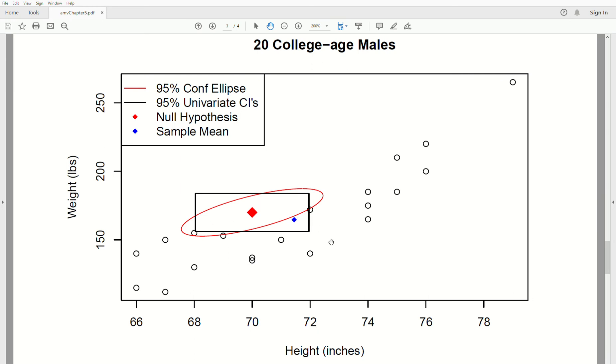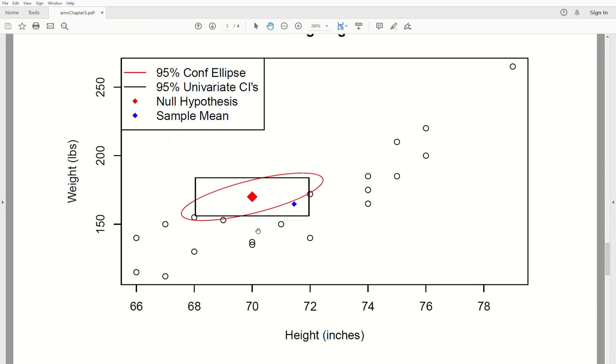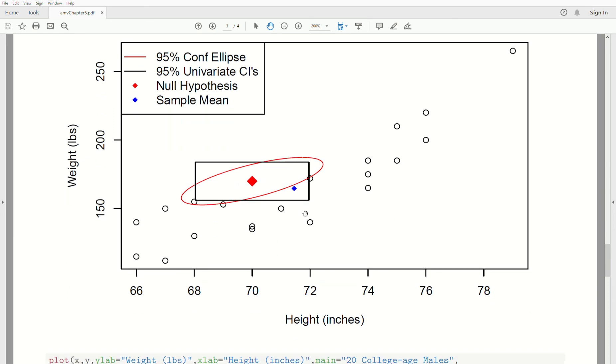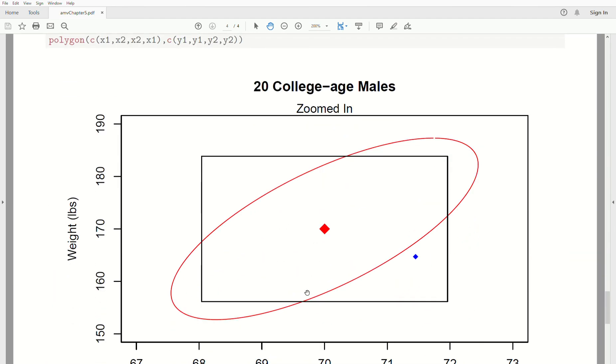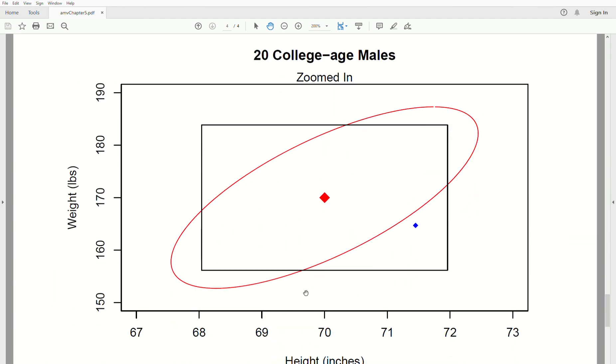And if we, well, actually let me, the next plot, I kind of blow up this region again to make it a little easier to see. So here it is. So this is the 95% confidence ellipse, our sample mean vector's outside of it, we reject.